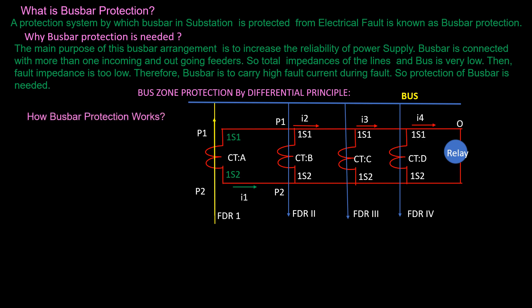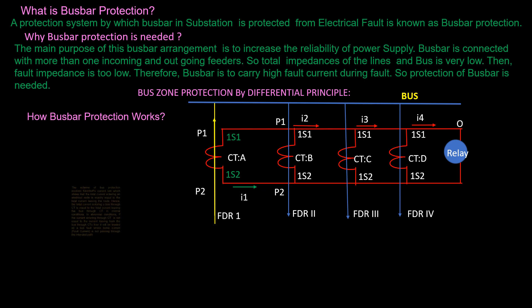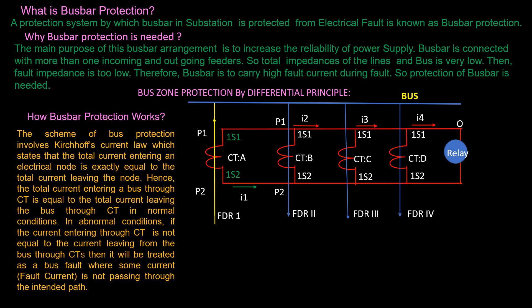How does busbar protection work? The scheme of bus protection involves Kirchhoff's current law, which states that the total current entering an electrical node is exactly equal to the total current leaving the node. Hence the total current entering a bus through CTs is equal to the total current leaving the bus through CTs in normal conditions. In abnormal, that is faulty conditions, if the current entering through CTs is not equal to the current leaving the bus through CTs, then it will be treated as a bus fault.